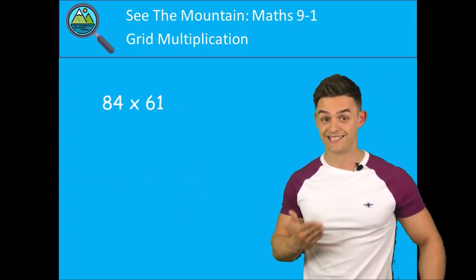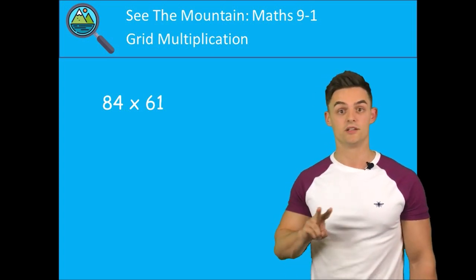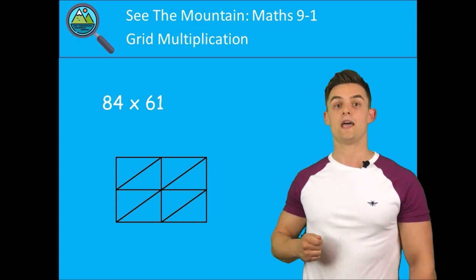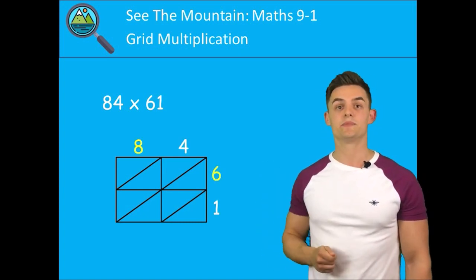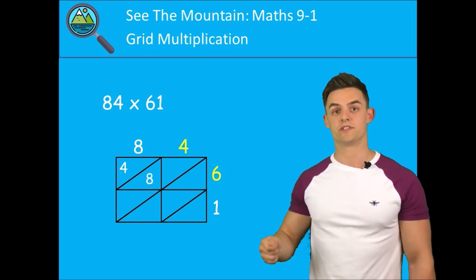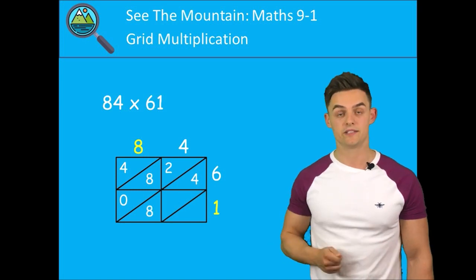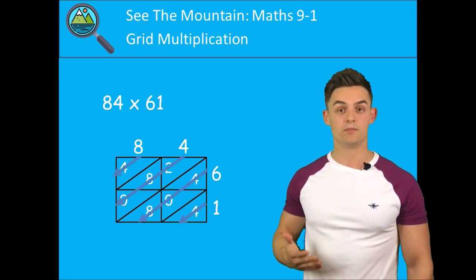Let's look at this example: we have 84 multiplied by 61. That's a two-digit number multiplied by another two-digit number, so our grid is going to be a two by two grid. We have the 84 across the top, the 61 down the bottom. 8 times 6 equals 48, 4 times 6 equals 24, 8 times 1 equals 8, 4 times 1 equals 4.